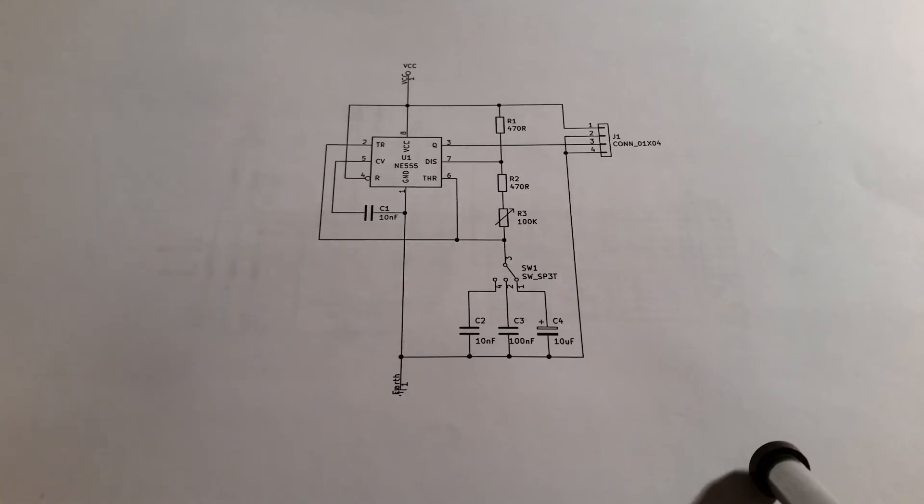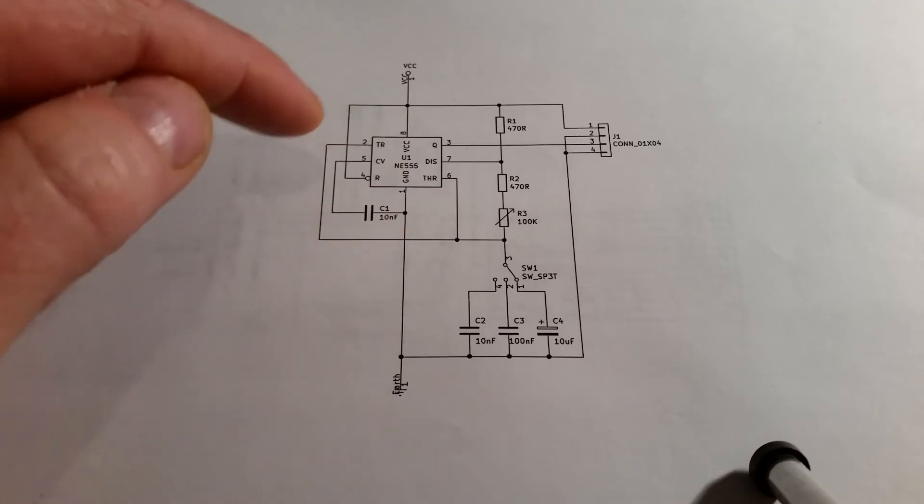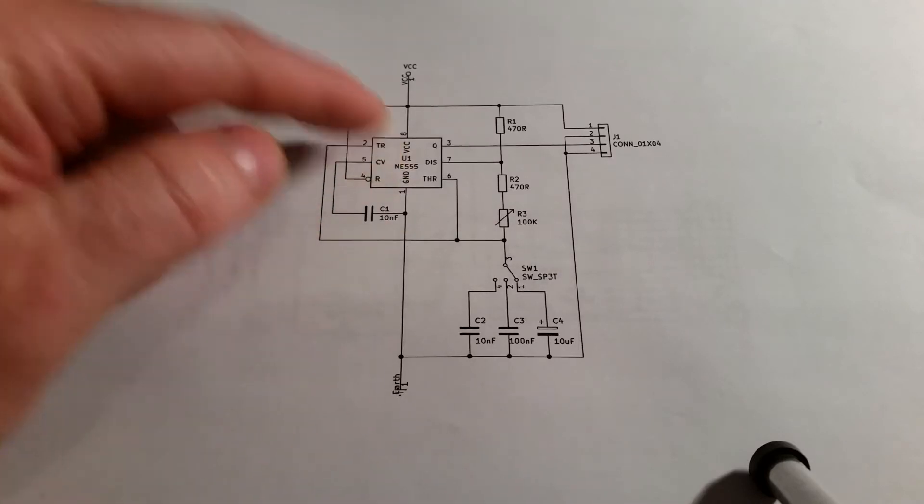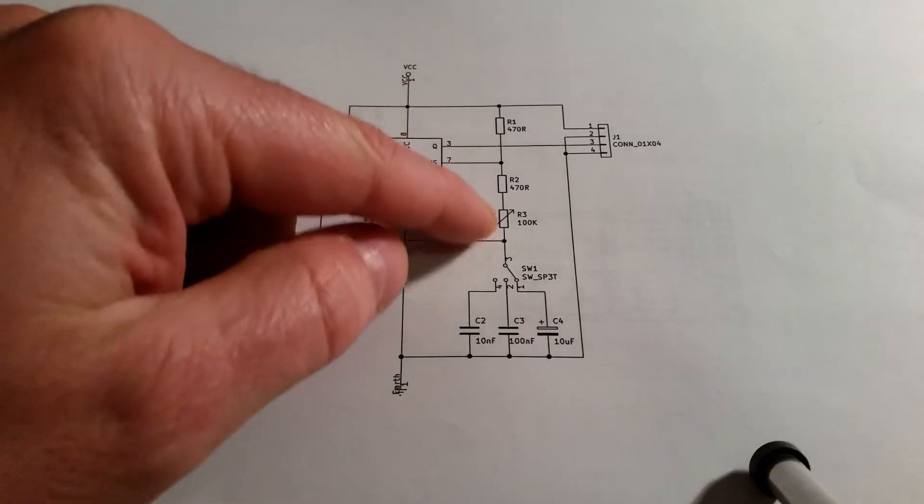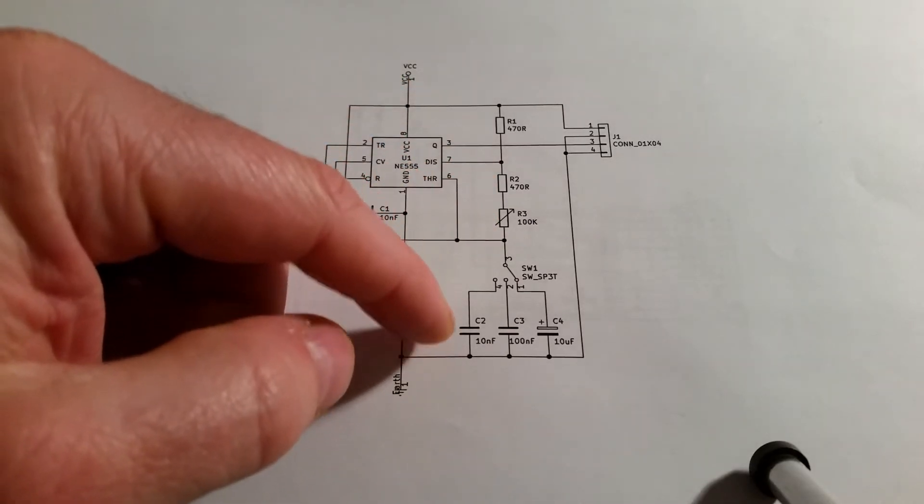The 555 timer makes a really good oscillator for low frequencies, anything below about 500 kHz. It's very simple to put together a circuit because it's just an integrated circuit, a few resistors and a capacitor.